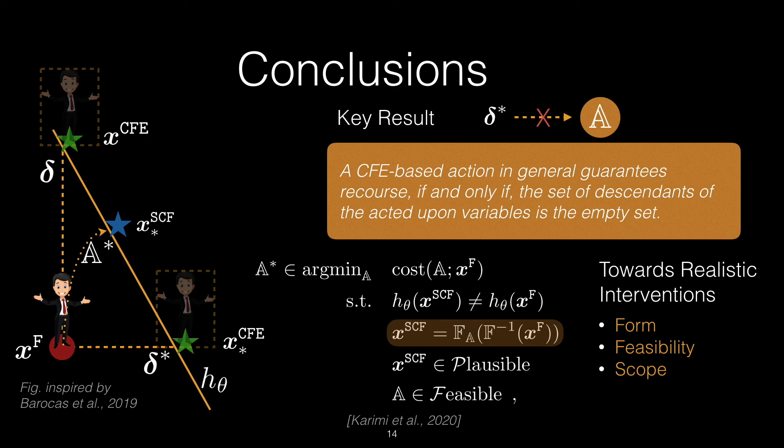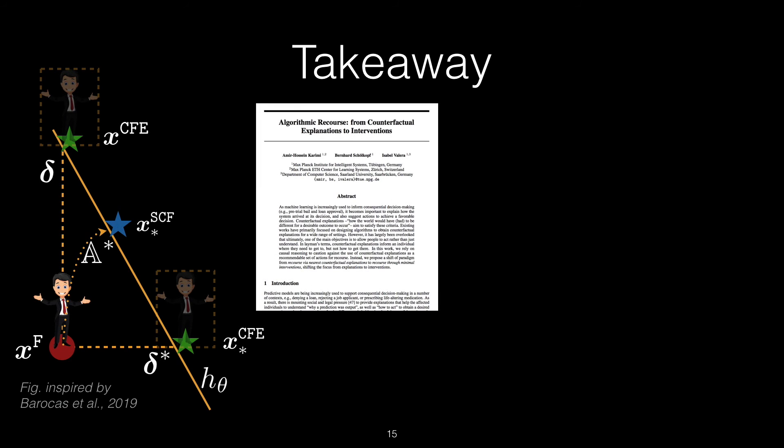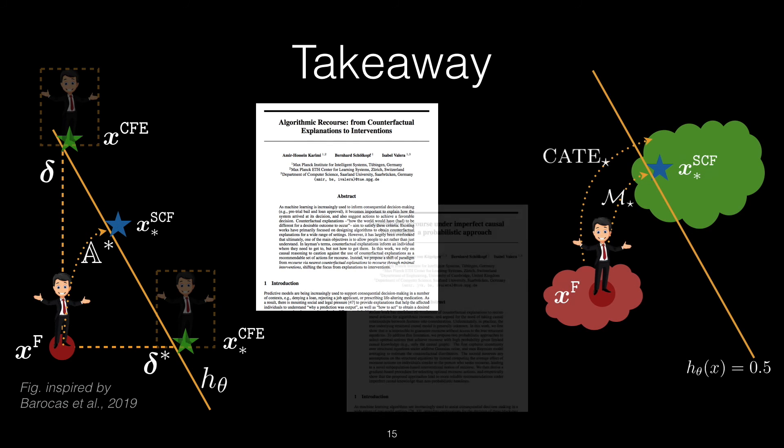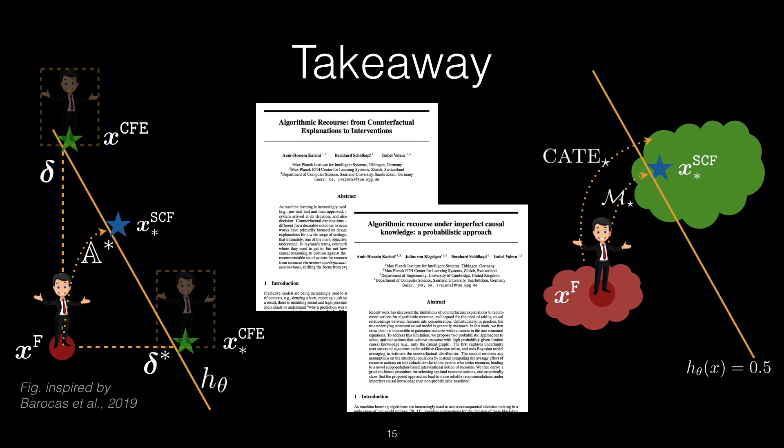Thus, while in this work we showed theoretically that recourse is not guaranteed in general using counterfactual explanations, in follow-up work we prove via contradiction that recourse can only be guaranteed if the true SCM is known. There we also relax the assumptions made in this work and no longer require knowledge of the entire causal model, but only that of the causal graph, and propose two probabilistic approaches along with new optimization formulations with brute-force and gradient-based solutions that would result in recourse with high probability, thus resolving the untestable assumptions about the SCM that would restrict their practical use.